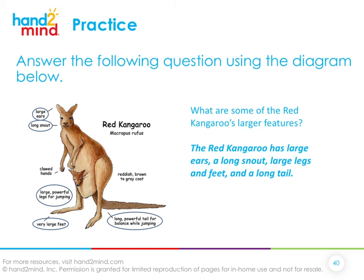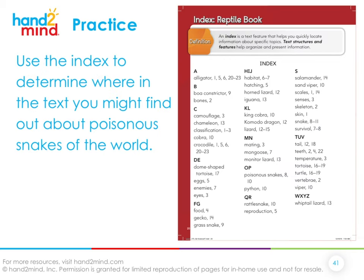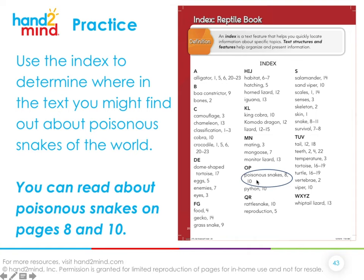Now let's practice using the index. Use the index to determine where you might find out about poisonous snakes of the world. I start by finding my subject — poisonous snakes — and look for P in alphabetical order. Indexes are also in alphabetical order. There it is: poisonous snakes. You can read about poisonous snakes on pages eight and ten.